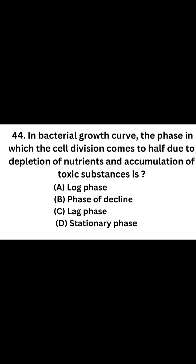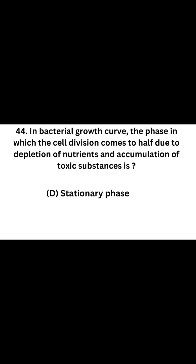Question number 44. In bacterial growth curve, the phase in which cell division comes to a halt due to depletion of nutrients and accumulation of toxic substances is: Option A: Lag phase. Option B: Phase of decline. Option C: Lag phase. Option D: Stationary phase. In stationary phase, the cell division comes to a halt due to depletion of nutrients and accumulation of toxic substances.